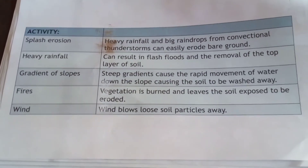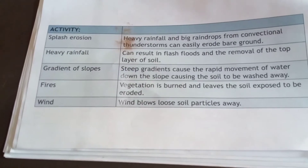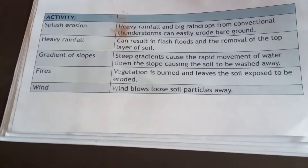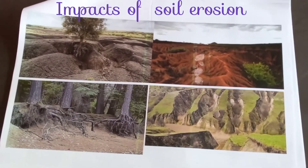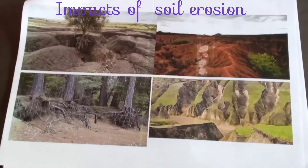Wildfires: when we have fires, vegetation is burnt and leaves the soil exposed to erosion. Wind — when we experience heavy winds, it blows away loose soil particles, and this blowing away of loose soil particles is soil erosion. These pictures show the impacts of soil erosion.